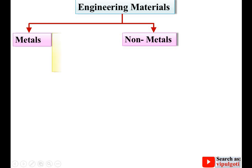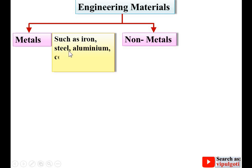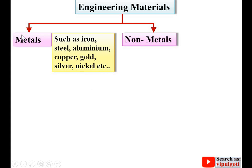In metals, we have materials such as iron, steel, aluminium, copper, gold, silver, nickel, etc. So these all are called as metals.